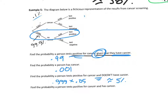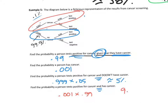Find the probability a person tests positive for cancer and has cancer. Multiply 0.001 × 0.99. The calculator gives 9.9 × 10⁻⁴, meaning we move the decimal four places: so approximately 0.00099, or about 0.099%.